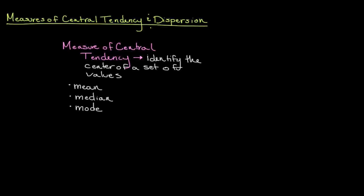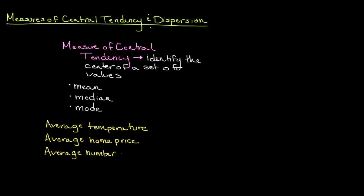So how are these helpful? Well, using something like a measure of central tendency allows us to level out widely varying data points. For example, the average temperature in a city during summer may be important to you, or perhaps the average home price in a certain zip code, maybe even the average number of points per game your fantasy basketball player scores.